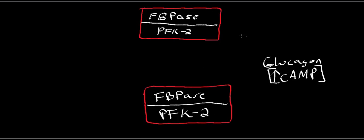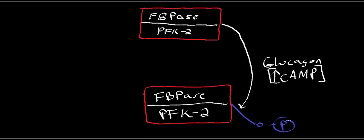Glucagon raises the concentration of cyclic AMP. Cyclic AMP causes activation of a cyclic AMP-dependent protein kinase. This protein kinase phosphorylates the bifunctional enzyme complex. When the complex is phosphorylated, it favors the fructose bisphosphatase 2 activity — that side becomes active.